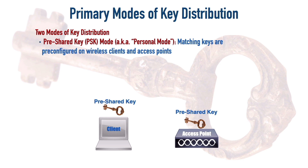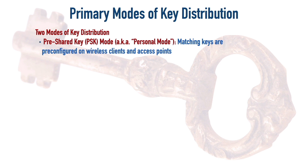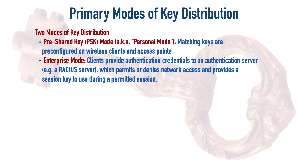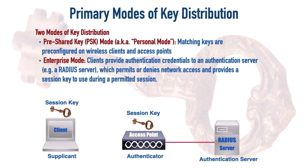So in an enterprise, we want to use enterprise mode. With enterprise mode, we have an authentication server and the client is going to attempt to authenticate — it says, 'I'd really like to join the network, here is my username and password.' We might have a RADIUS server acting as the authentication server, and it's going to generate a key that's only good for this session and only between this client and this access point. So the session key is going to be unique to this session.